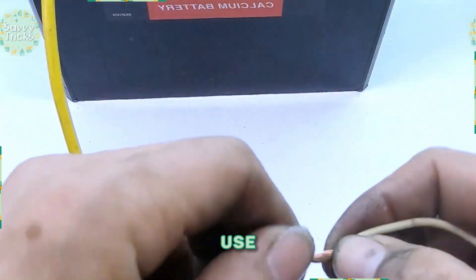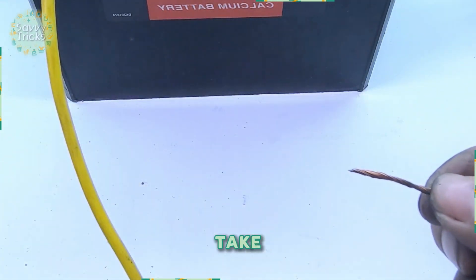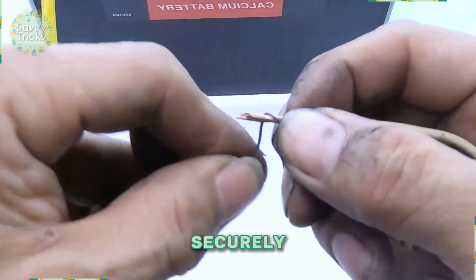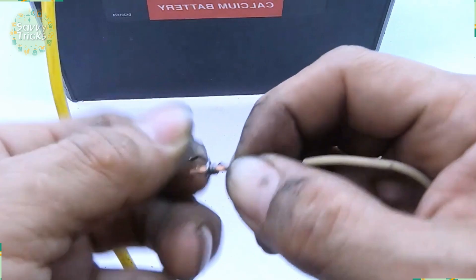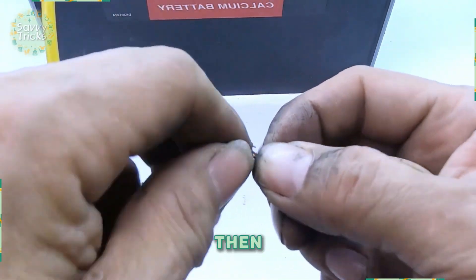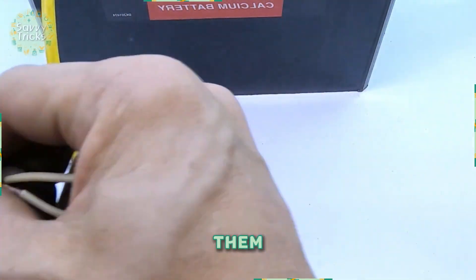Now we'll use it to join wires. First, we'll take two wires and connect them securely. Then we'll wrap soldering wire around them and cut off the excess.